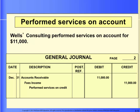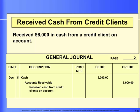Next, let's assume that the firm performed services for $11,000 on account. Remember that we record the revenue as earned even though we haven't yet received the cash. When the firm performs services for credit clients, it will debit accounts receivable and credit fees income for $11,000. When the firm later collects $6,000 from credit customers, it needs to debit cash and credit accounts receivable.